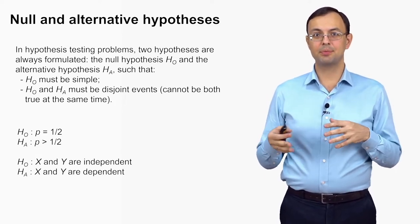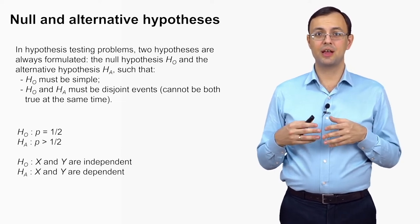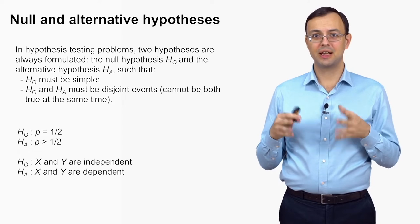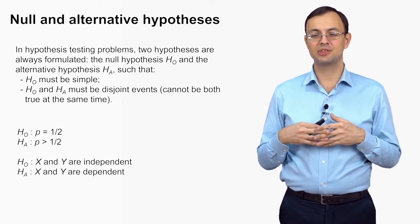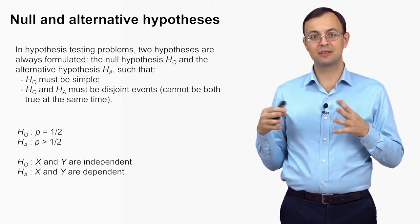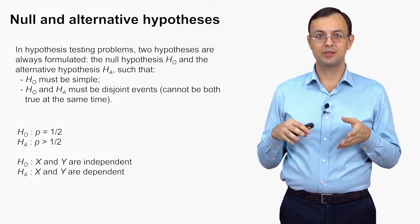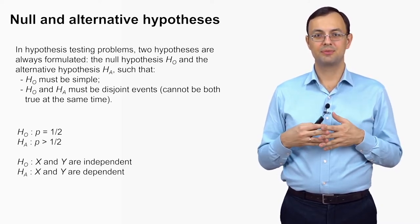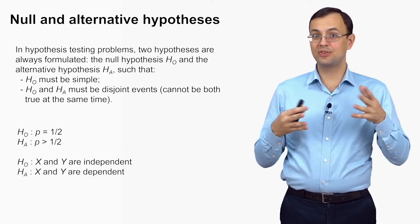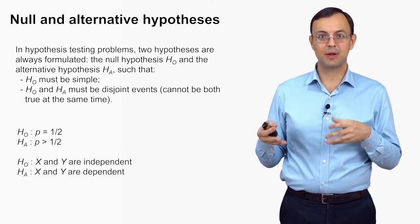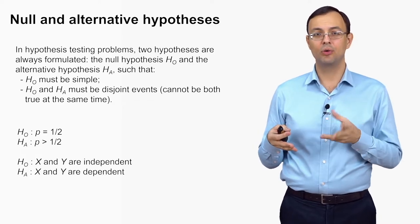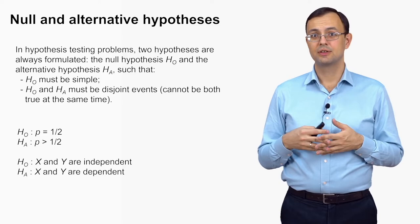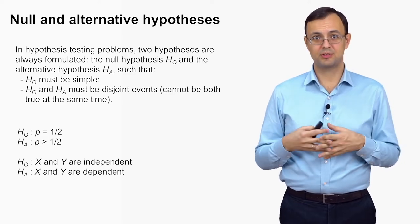In a second example, the null hypothesis is that two random variables are independent and the alternative is that they are dependent. Here the hypotheses are both mutually exclusive and collectively exhaustive — either one or the other must be true, and no third option is possible.